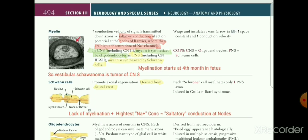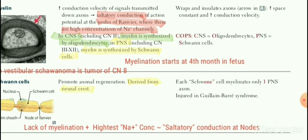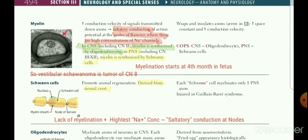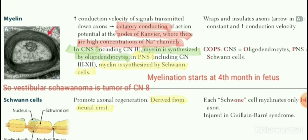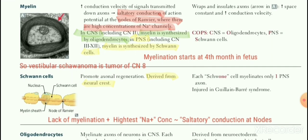The first MCQ is about when myelination starts — that is the fourth month in the fetus, which you can add as a note since it's not written in the book. Myelination is carried out by two types of cells: for the CNS it is oligodendrocytes, and for the peripheral nervous system (PNS) it is Schwann cells.